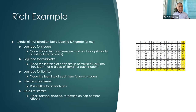The last predictor is a complicated one called base four — four stands for it having four nonlinear parameters in order to track learning, spacing, and forgetting on top of the other previous effects. This is a rather rich, complicated example. When I start running the examples in a minute, I'm going to start with some simpler ones.